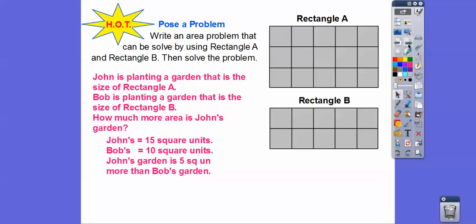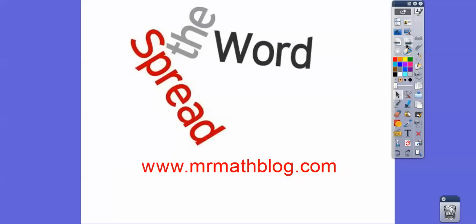So John's is 15 and Bob's is 10. So John's garden is going to be five more than Bob's garden because we subtract them right there. So it just said make an example that represents that. All right, you guys. Nice fast lesson. Take care.